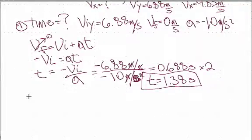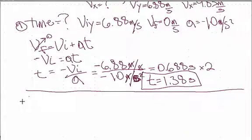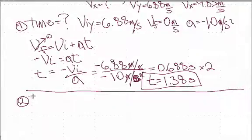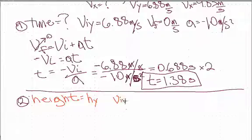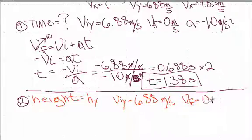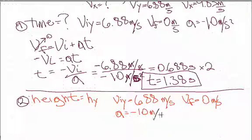Now let's do question number two: the maximum height. We'll call it h-y, the height in the y direction. We still know the initial velocity in the y direction is 6.88 meters per second, the final velocity is zero meters per second, and the acceleration is minus 10 meters per second squared.